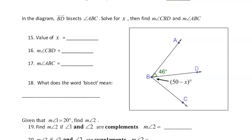Find the measure of angle CBD and the measure of angle ABC. Since BD bisects ABC, and angle ABD is 46 degrees, then angle DBC also has to equal 46 degrees. So what does X have to be? 46 equals 50 minus X.